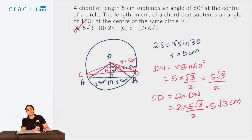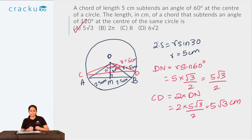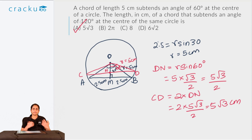This question required simple knowledge that the line joining the center of the circle to the midpoint of the chord is a perpendicular bisector. Knowing that theorem made it a straightforward application of trigonometric formulae. This is how we solve questions based on circles and triangles. Let's look at more questions in further videos. Thank you for tuning in.